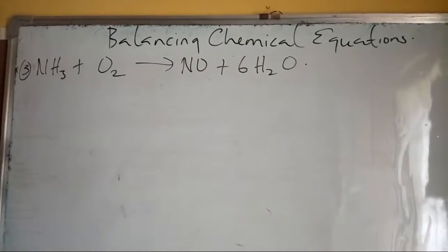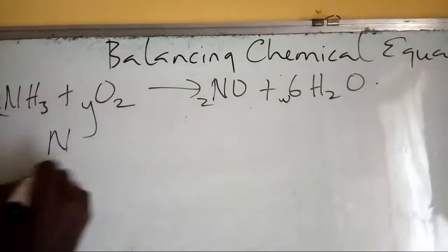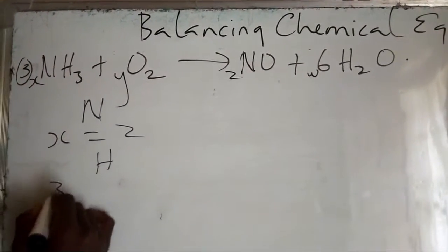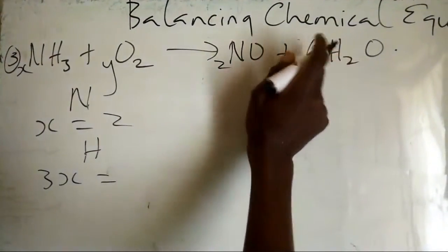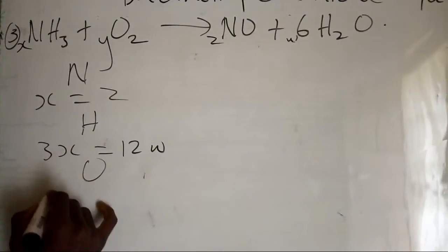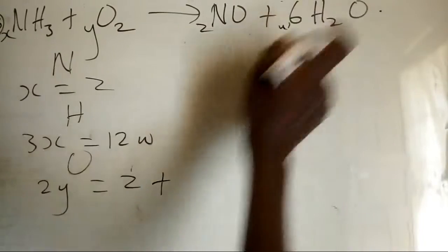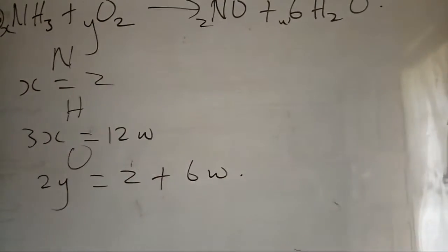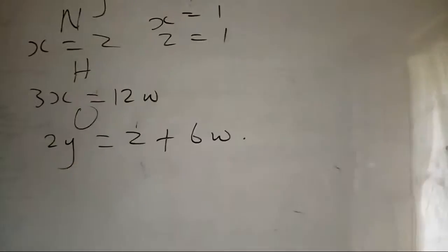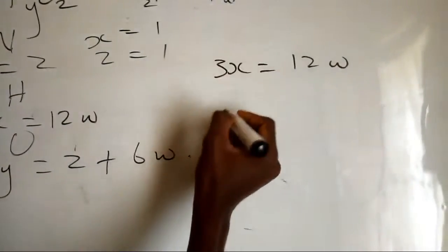Now let's balance another equation. Assign x, y, z, and w. For nitrogen: x equals z. For hydrogen: 3x equals 12w. For oxygen: 2y equals z plus 6w. Set x equal to one, so z also equals one.